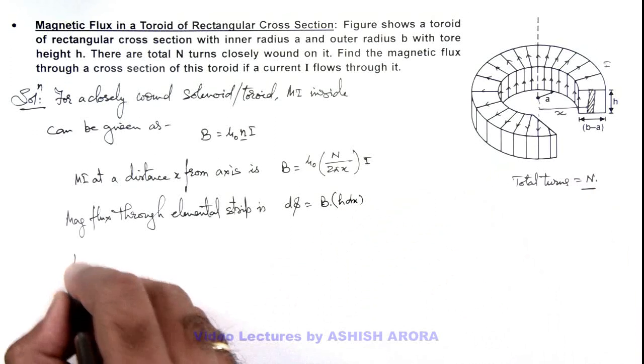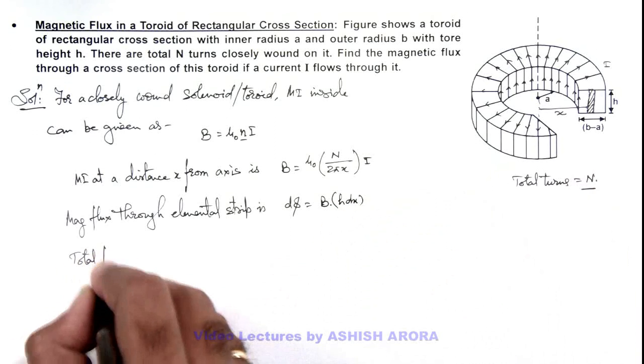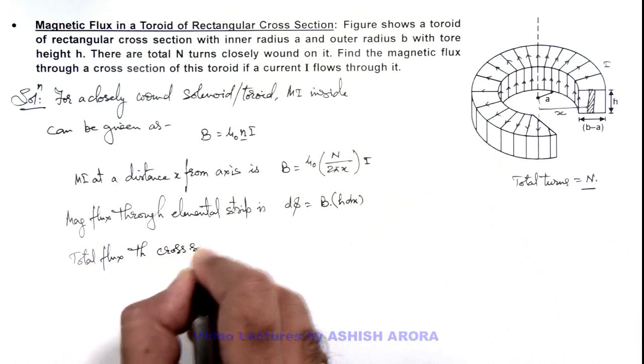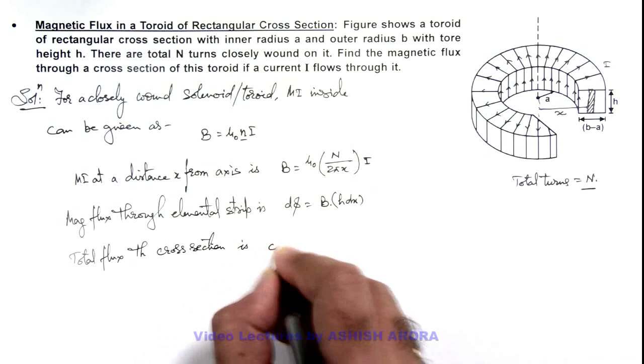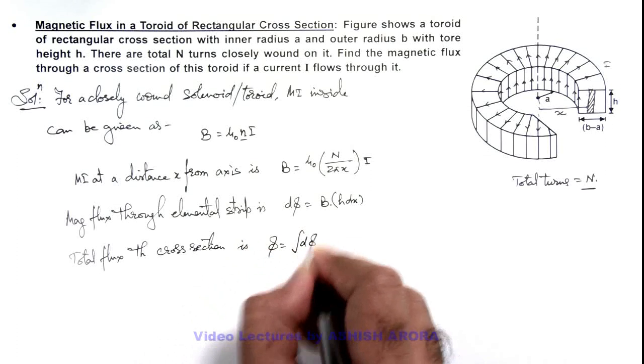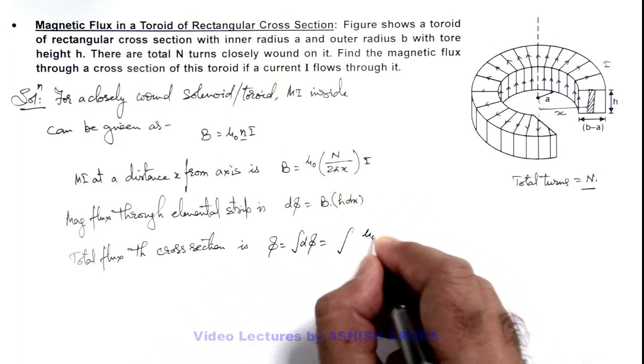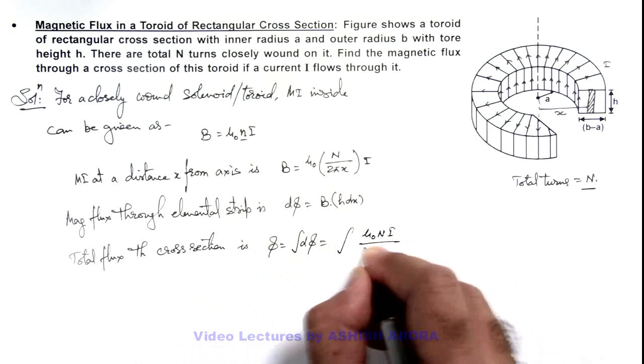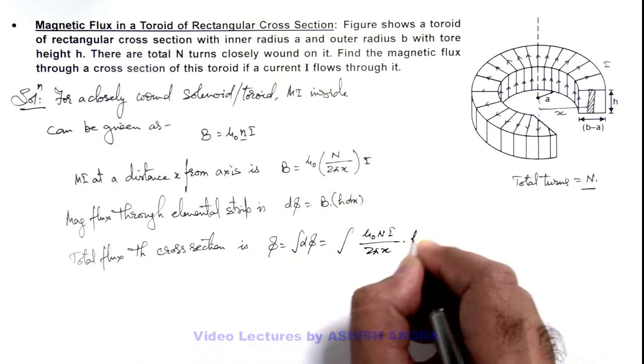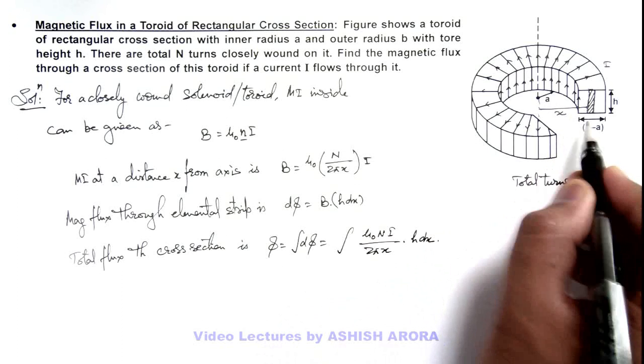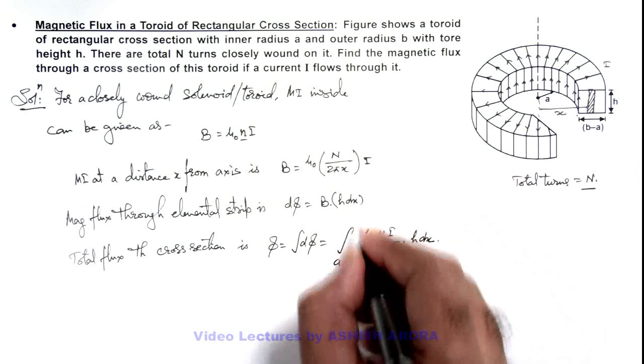We can calculate the total flux through cross section as integration of dφ, which is the integration of B·h·dx. Here we substitute the value of B, which is μ₀NI/(2πx) multiplied by h·dx, and we integrate it within limits of x from inner to outer radius, that is from a to b.